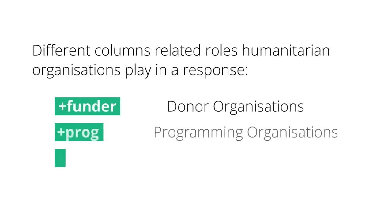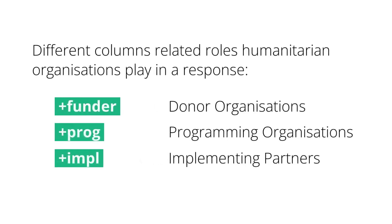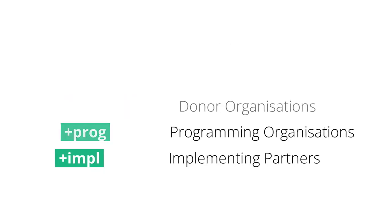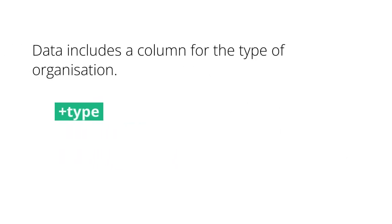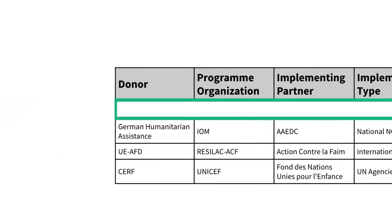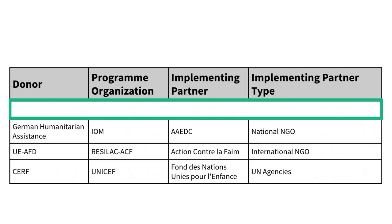If your dataset contains different columns for different roles that humanitarian actors play in a response, you could use the attribute funder for donor organizations, the attribute prog for programming organizations, and the attribute impl for implementing partners. Finally, use the attribute type for data about the type of organization. Let's look at how this all comes together in this sample 3W.